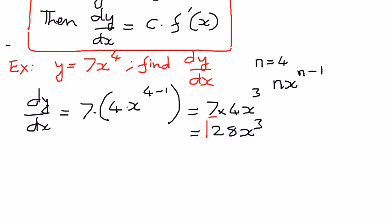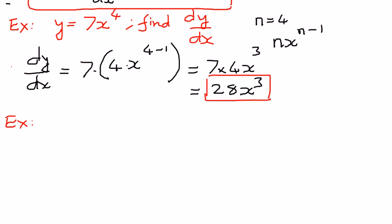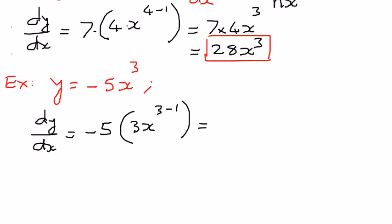And that is our answer — that is where we want to leave it. If we take another example, like y equals negative 5x to the power of 3, and we want to find the derivative, dy by dx is equal to negative 5 times 3x to the power of 3 minus 1, since n equals 3. When we simplify, negative 5 times 3 is negative 15, and the power is 2, giving us negative 15x squared. This is how we use the constant multiple rule to differentiate functions of this nature.